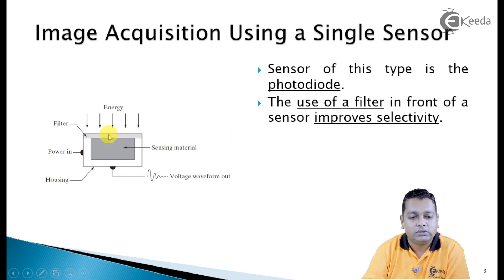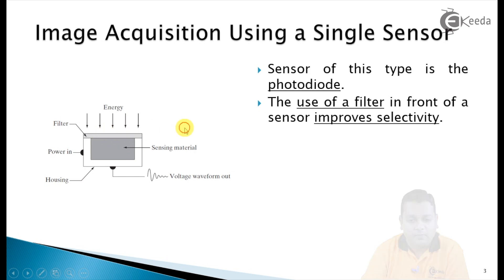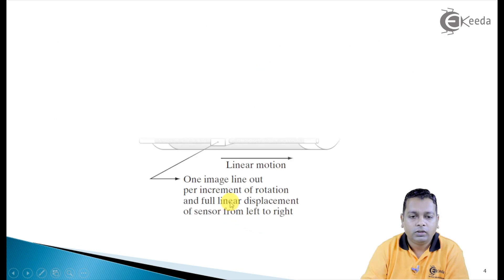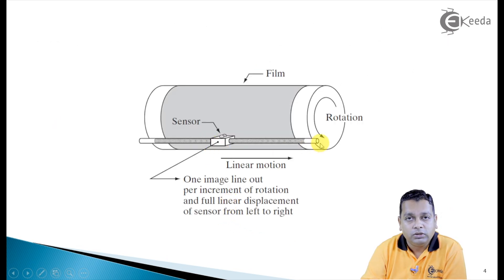The use of a filter in front of the sensor improves the selectivity of the incident energy. Now, in order to generate a two-dimensional image using a single sensor, there has to be a relative displacement — in other words, motion — because the single sensor must sense the entire scenario. Displacement or motion in both the x and y directions must be carried out by this sensor to cover the area to be imaged.